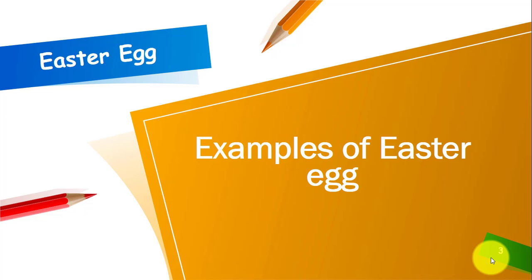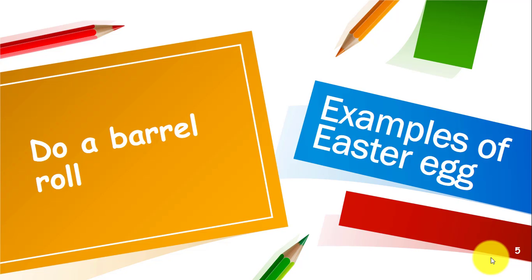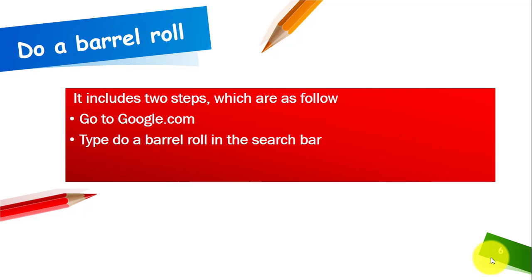We have a few examples of Easter eggs. The first example is 'Do a Barrel Roll'. For this Easter egg you will have to follow a two-step process. First, open any browser — Chrome, Mozilla, or whichever you want — then type google.com. In the search bar, type 'do a barrel roll'. When you type this you will see an Easter egg. In the comment section you can tell me what you have seen.